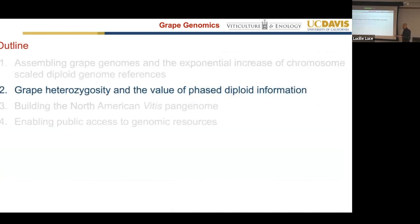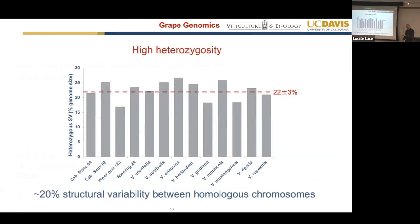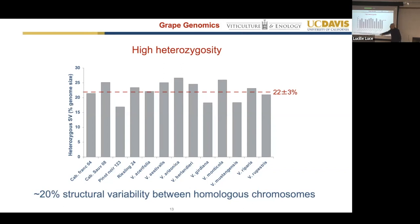So we have the tools, and using them, one of the first observations is the high degree of structural variability. By looking at markers, it was clear that cultivars and wild species are heterozygous. Looking at single nucleotide polymorphisms, we can observe over 2% heterozygosity. What became clear early on, when we started generating the first, second, and third genomes, is that we found extremely high structural heterozygosity.